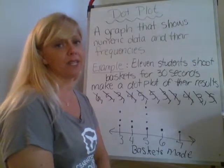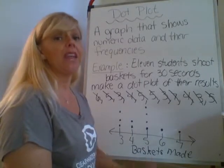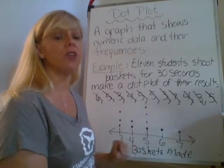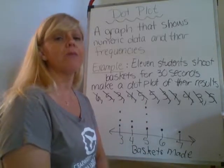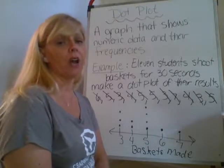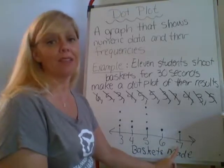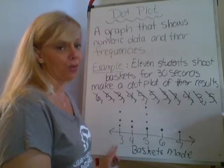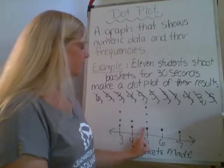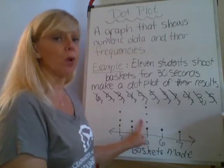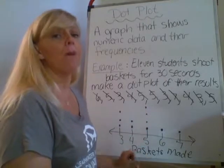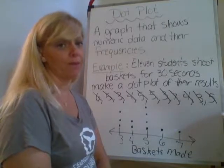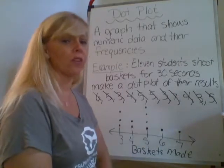What was the most baskets somebody made? This is where a lot of sixth graders say 5, because that's where the highest bar is. But the question is asking for the biggest number of baskets made, which is 7. The lowest number of baskets made is 3. So you see the difference — the most students made baskets at 5, but the highest number of baskets was 7 and the lowest was 3. Notice the difference in the wording of the question.